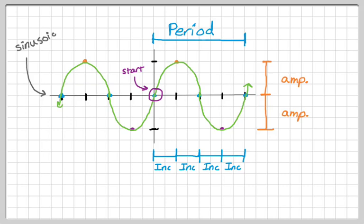We have something called the sinusoidal axis — that's kind of where the graph is hanging. I'm going to abbreviate that SA. In this case, that would be y equals zero, and the amplitude is measured from there. If you look at the pattern, we have an intercept, a maximum, an intercept, a minimum, and an intercept. We're going to use that to establish some patterns for these.